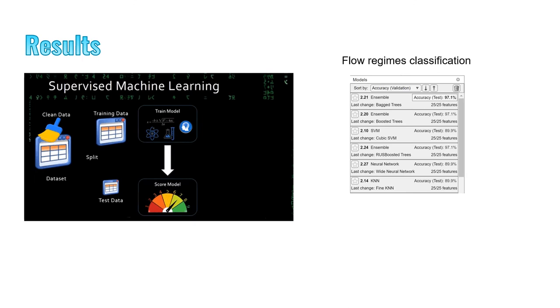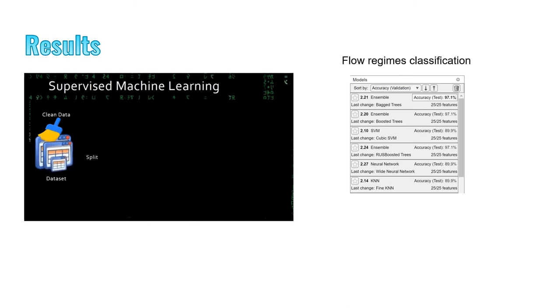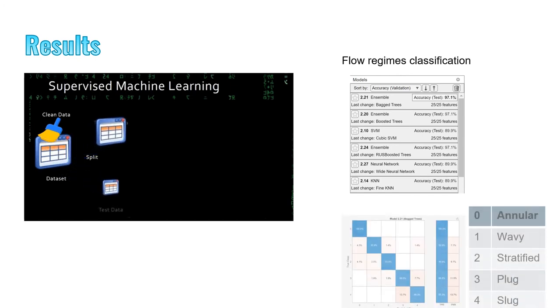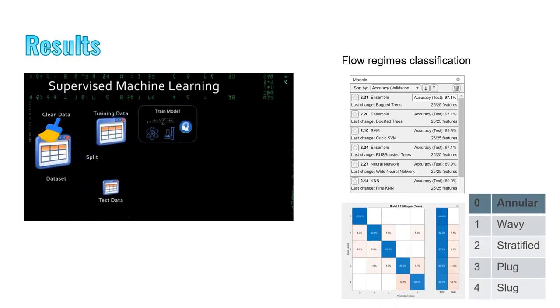In this case, the ensemble model with the technique of the bagged tree has the highest accuracy of 97.1%. The confusion matrix shows the estimated flow regimes using an ensemble with bagged trees.